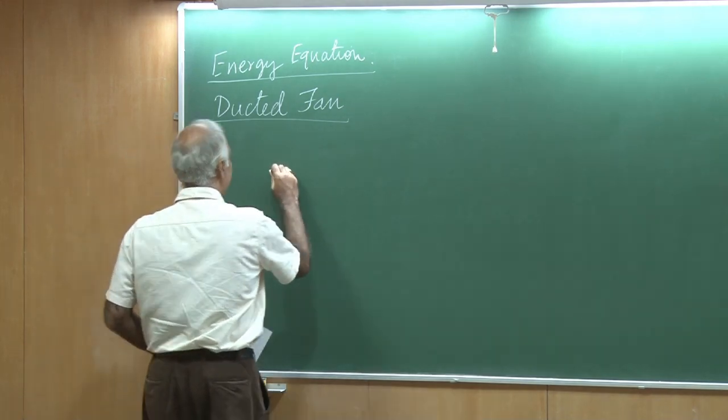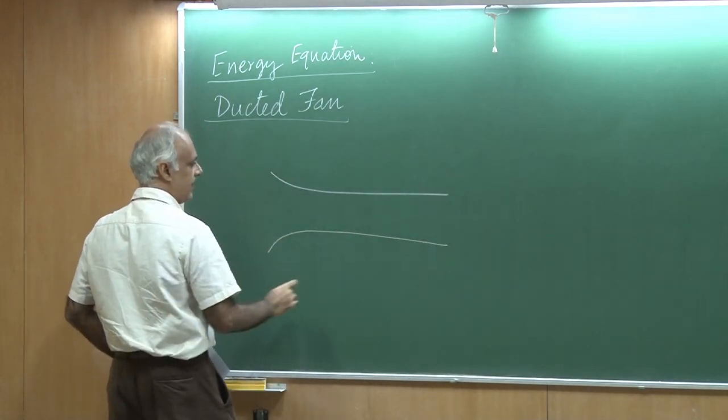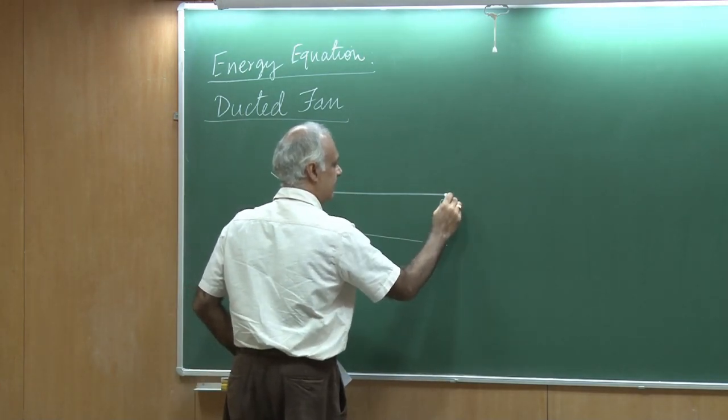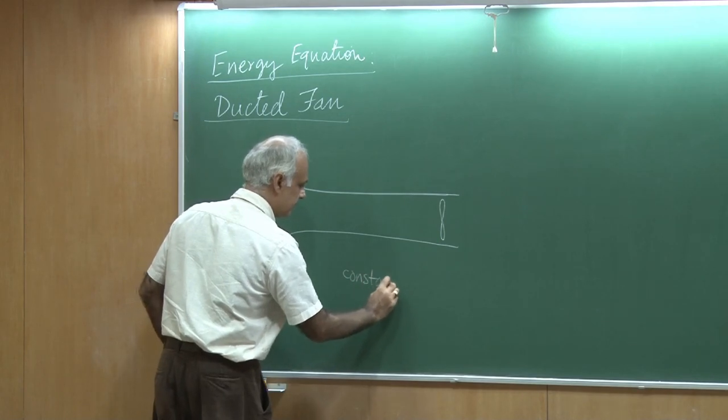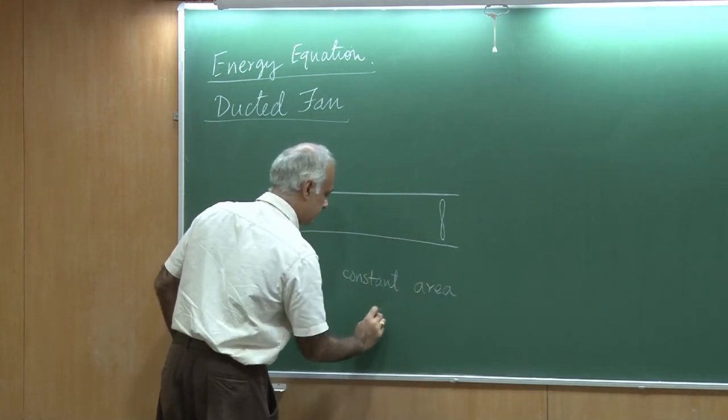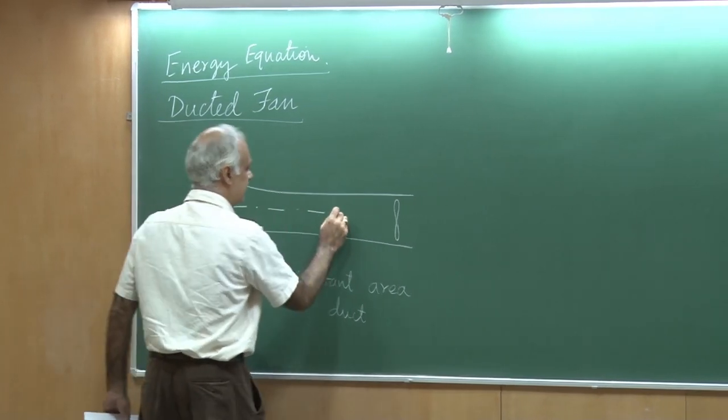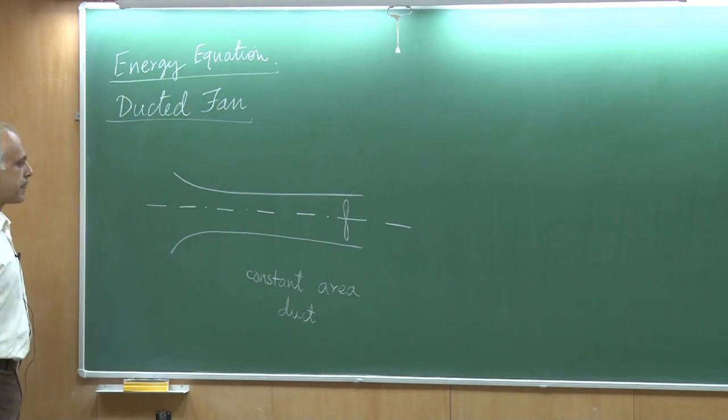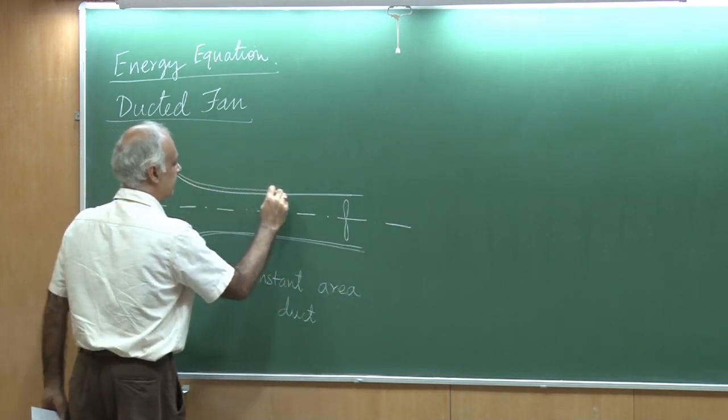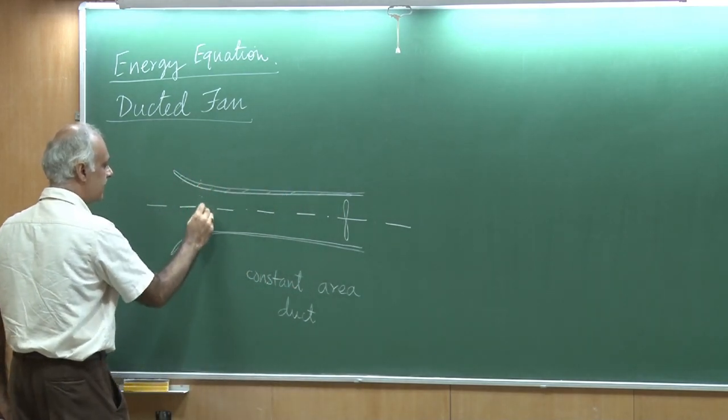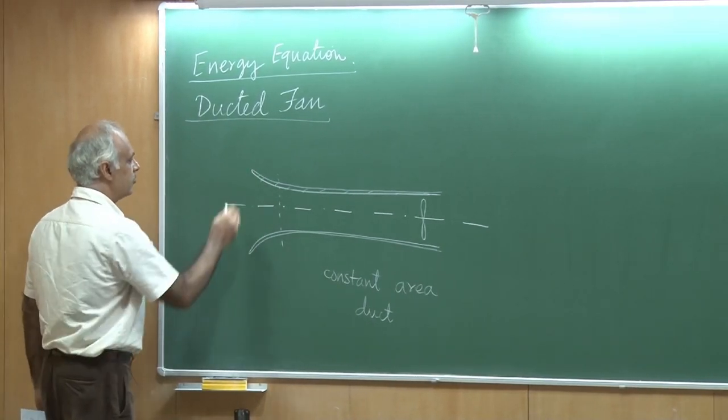Imagine that there is a duct, a constant area duct, and it has a fan installed in it. This is the schematic of a fan and this is the center line, the axis of the duct. This shroud here has a part which has a wide mouth, a kind of converging section. This is known as the bell mouth.